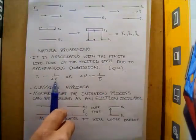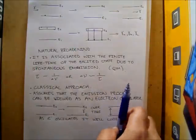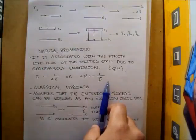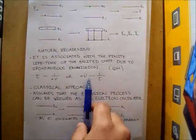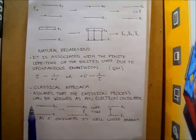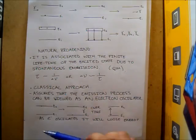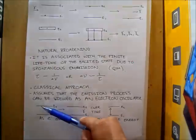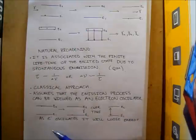Delta nu is the frequency range over which the photons are being released. According to the equation, if the lifetime of the emission was very large, delta nu will tend towards zero. Conversely, if the lifetime was very small, then delta nu — the broadening — will be very large. In the classical approach, you assume that the emission process can be viewed as an electron oscillator. I have my electron energy diagrams: E1 lower, E2 higher, with an electron at E2.